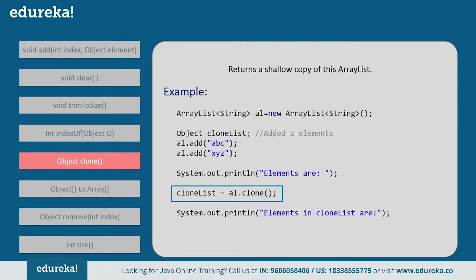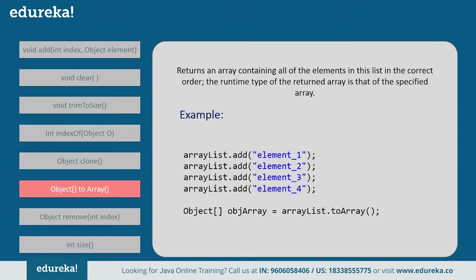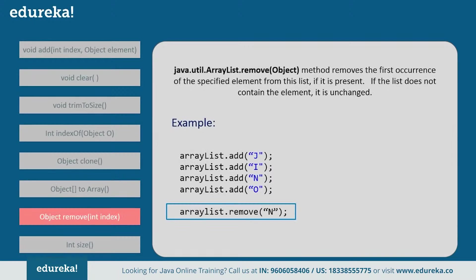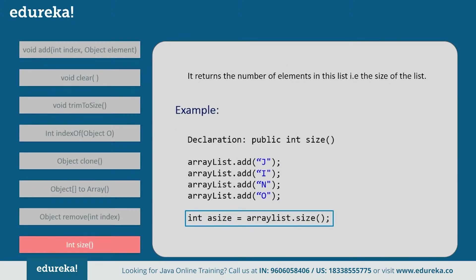So for example, if you add two elements and clone the entire thing, the clone list will return all the elements present in the ArrayList. Next, toArray() — this method returns an array containing all the elements in the list in the current order. Next, the remove() method — this removes the first occurrence of a specified element from the list if it is present. For example, if you want to remove 'n' from the list, it removes the first occurrence of 'n'; if there is another occurrence, it won't remove that. Next, size() — this returns the number of elements in the list. Suppose we have added four elements; then it returns the size of the ArrayList as four. Now let's demonstrate all the methods.